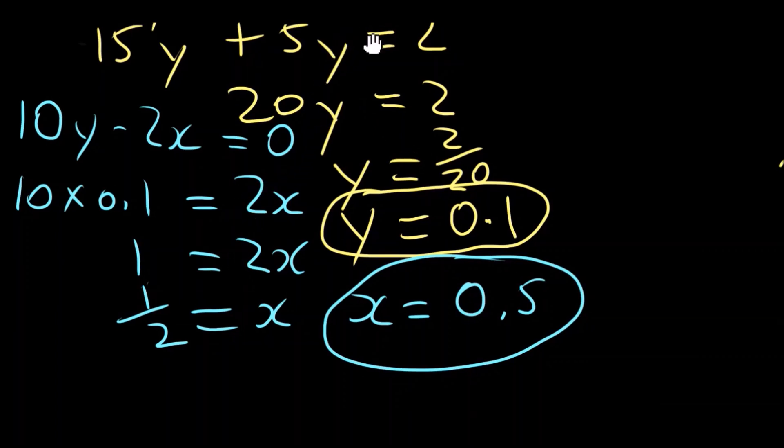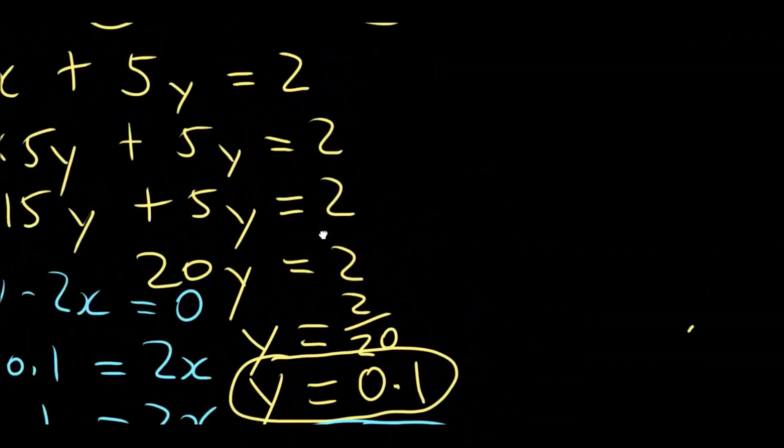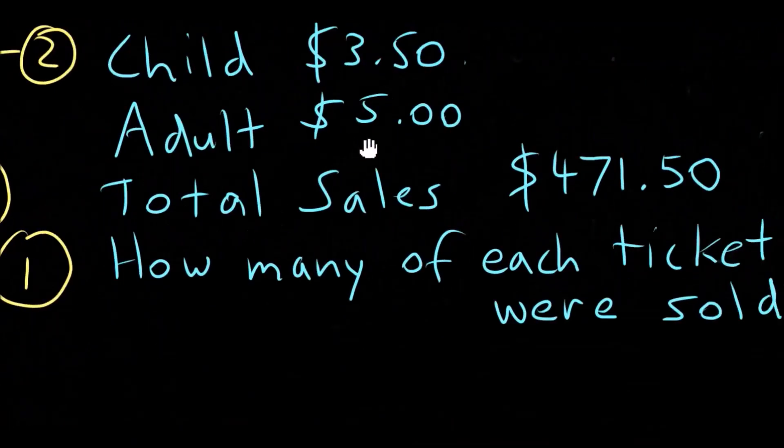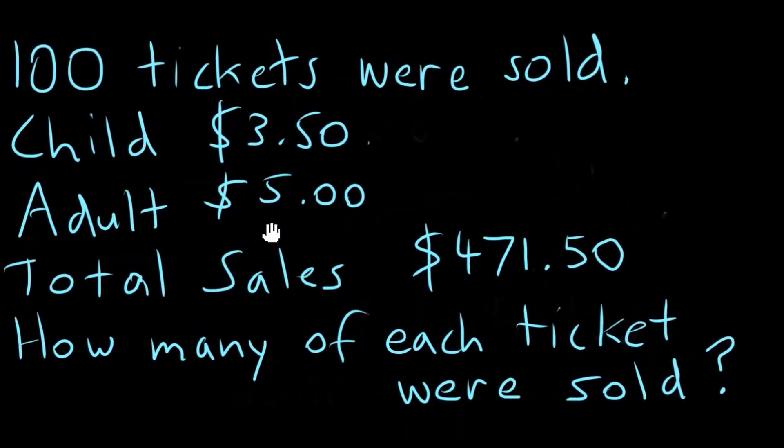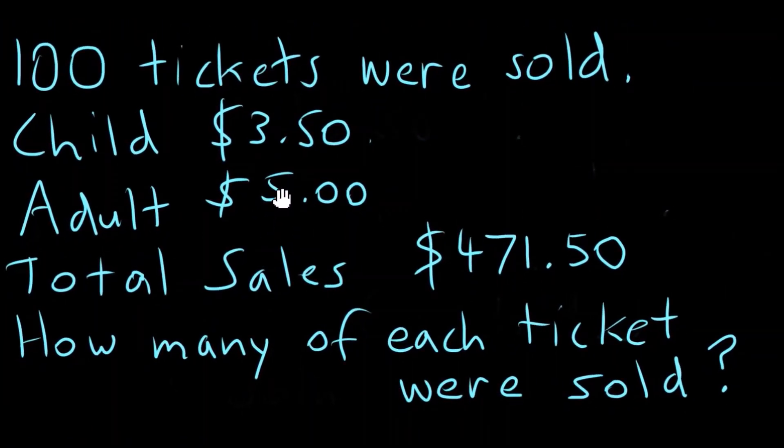Okay, let's do a word problem now. So we have 100 tickets were sold. Children's tickets are $3.50 each. Adult tickets are $5 each. And the total sales were $471.50. So how many of each ticket were sold?